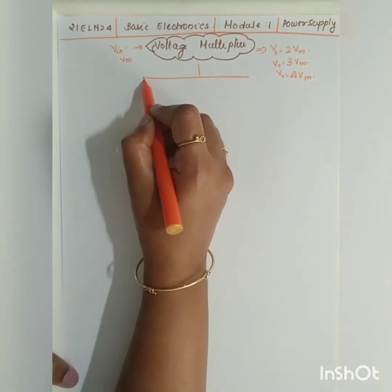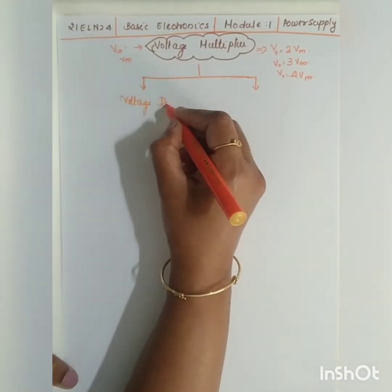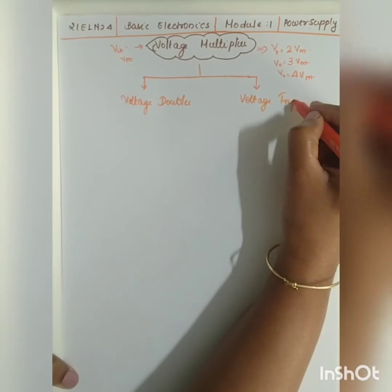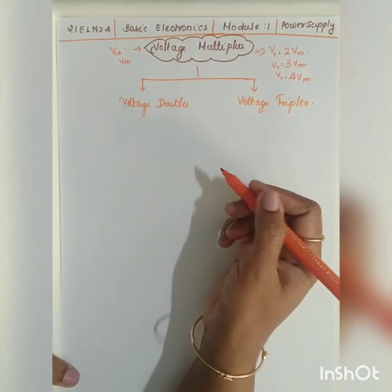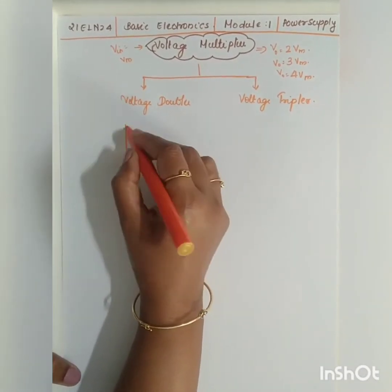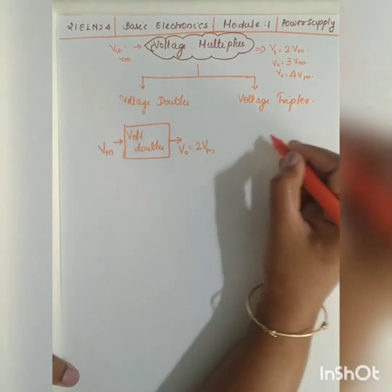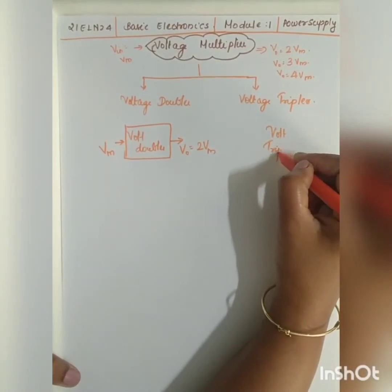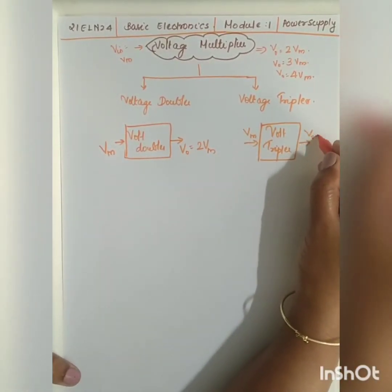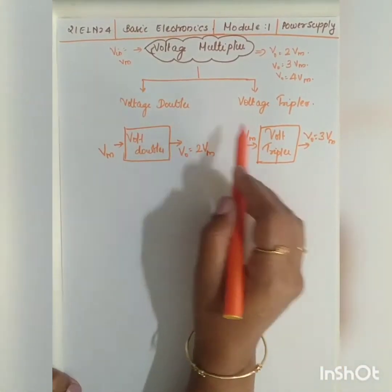As per your syllabus, you are going to study two different types of voltage multipliers. The first one is called the voltage doubler and the second one is the voltage tripler. For a voltage doubler, if the maximum input is Vm then the output is going to be 2Vm. Similarly, for a voltage tripler, if the maximum input is Vm then the output is going to be 3Vm.